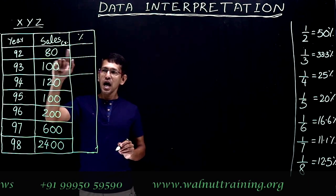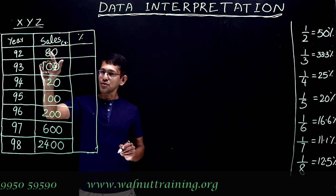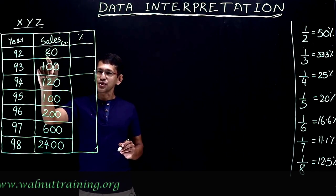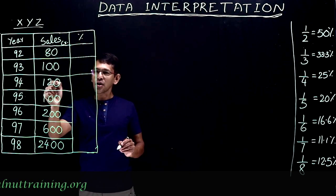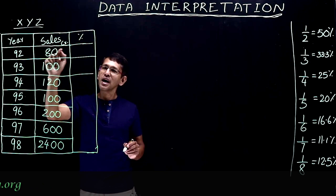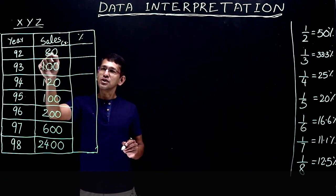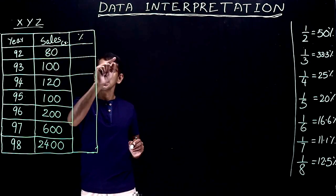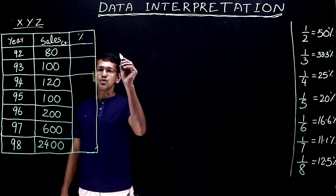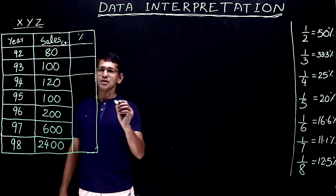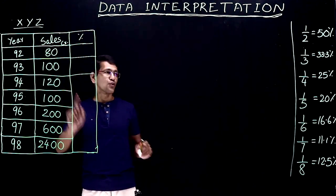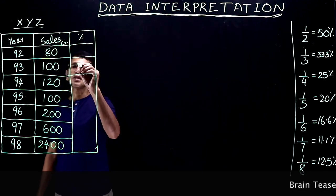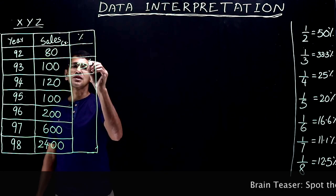The base year is 92, where the actual revenue is 80 crores. So 20 crores increase from 80 crores — that's 20 by 80, which simplifies to 2 by 8, then 1 by 4, which is 25 percentage. So the increase is 25 percentage.